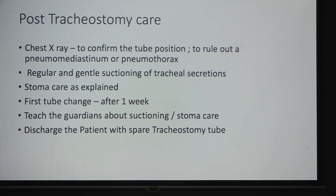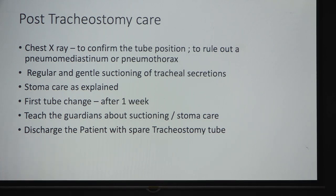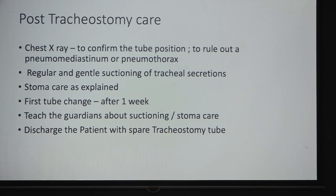In post-operative care, routine chest X-ray confirms tube position and rules out pneumomediastinum or pneumothorax. Regular and gentle suctioning of the trachea should be done — usually every two hours or as required. The first tube change is done after the first week. Involve caregivers and parents in suctioning and stoma care from the beginning. The child may eventually go home on a tracheostomy, so discharge with a spare tube and teach the caregivers tube changes.